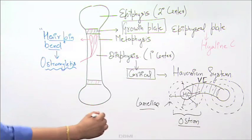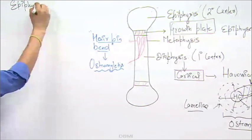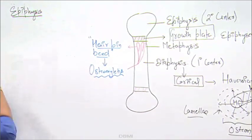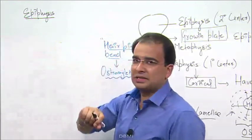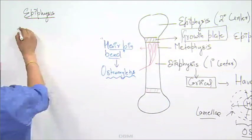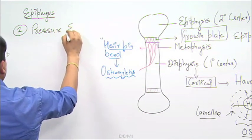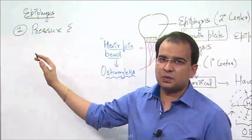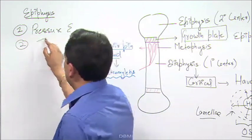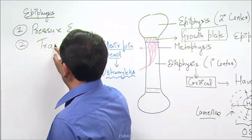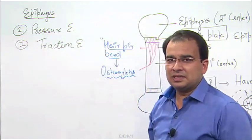Now guys, epiphysis can be divided into four types. We can have four types of epiphysis: one is pressure epiphysis, one is pressure epiphysis, traction epiphysis.